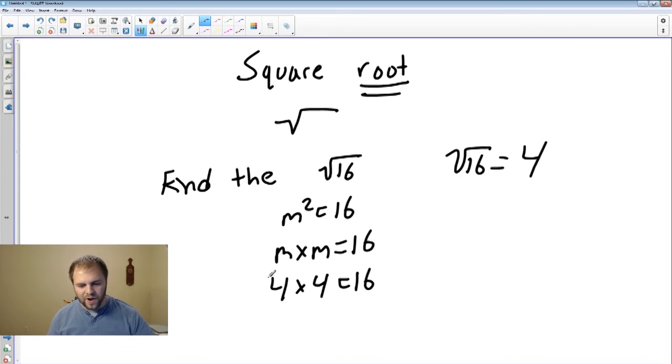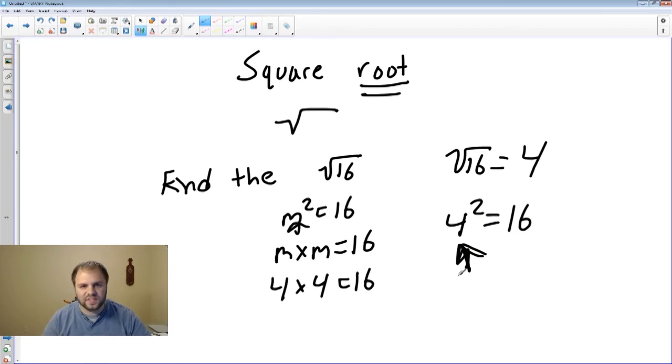Now you're probably wondering, why doesn't it equal 4 times 4? Why is the square root not 4 times 4? Well, because we're looking at the root number. And the root number in this is 4. 4 squared equals 16. 4 is the root of it. This is the root number that's being squared.